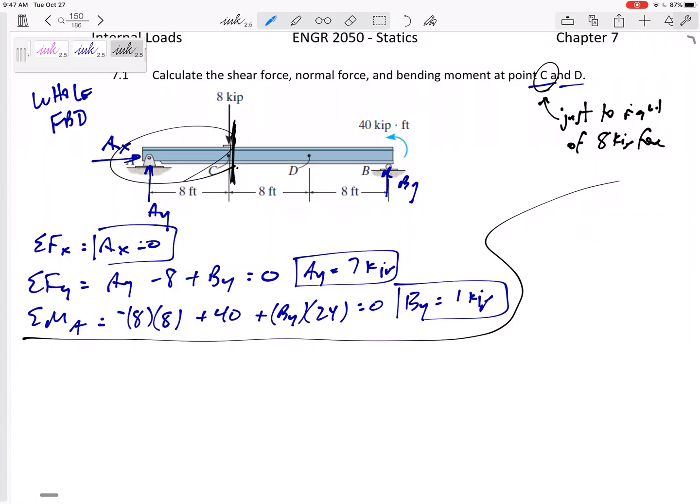Alright, so let's cut it here. I'm going to draw this over here. Try to make room. And I'm cutting it right here just to the right. So I've got an AY of 7 and AX of 0. So I don't think I'll draw that. I've got that 8 kip right there. Alright, let me draw N that way, V that way, and M that way. Draw it in the positive sign convention.